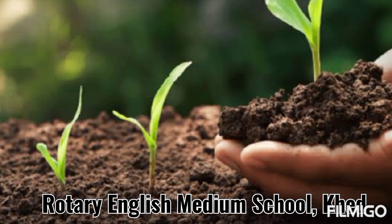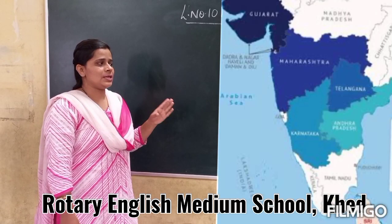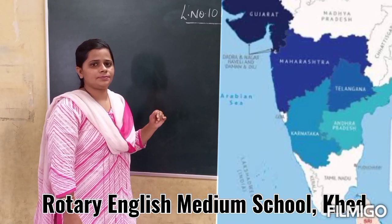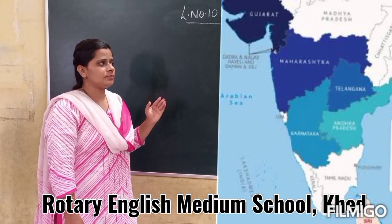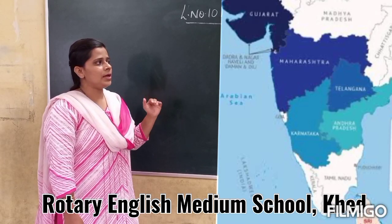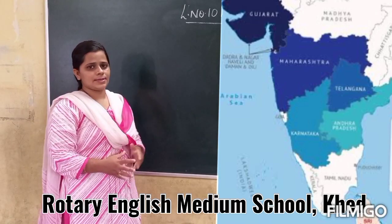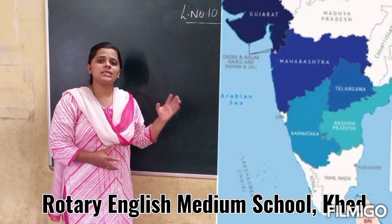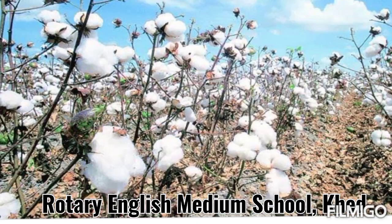The soil for cotton is black soil or alluvial soil — in this soil, cotton is grown. The states that produce cotton are Gujarat, Maharashtra, Tamil Nadu, Madhya Pradesh, etc. I hope you have understood about cotton.